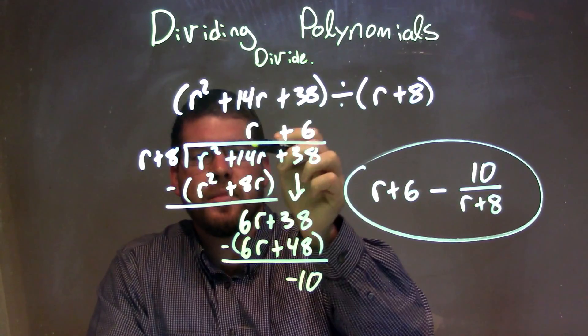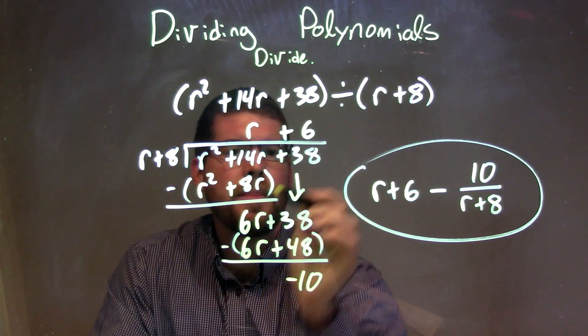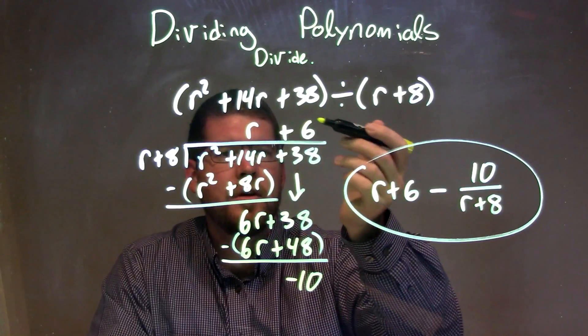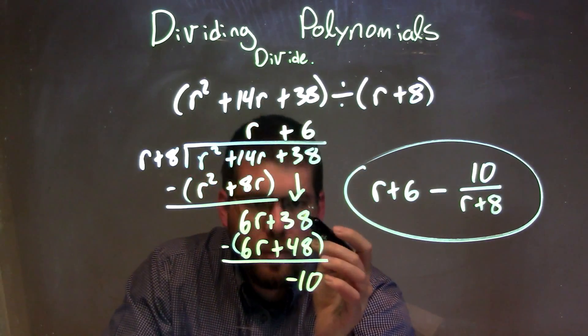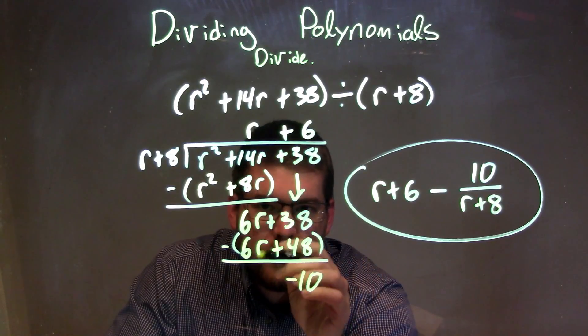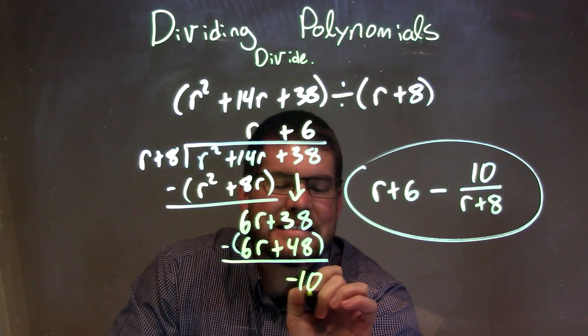We subtract them, giving me a 6r here, brought down 38. Then what times r gives me a 6r? That's a 6. 6 times r is 6r. 6 times 8 is 48. We subtract them. When I subtract them both above each other, so we get minus 10.